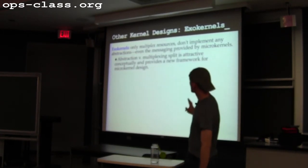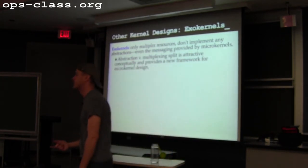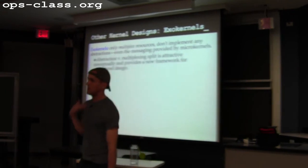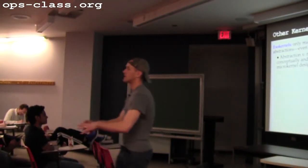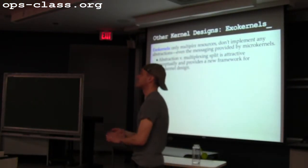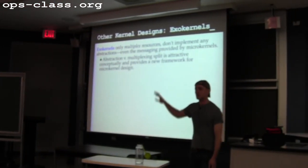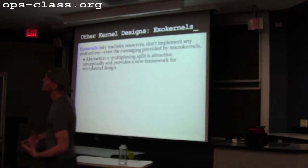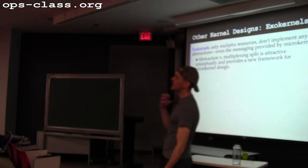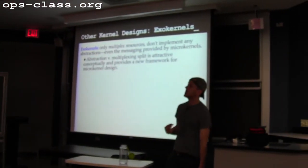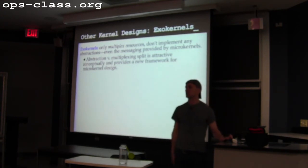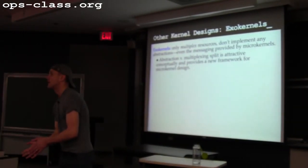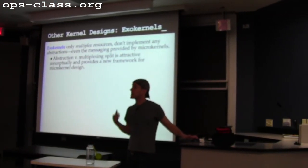Two other interesting kernel designs, both continuations of microkernels. The exokernel idea was born at MIT. The way they split the kernel between things that provide abstractions and things that multiplex resources is really useful — that was their key conceptual contribution. What should be in the microkernel? The stuff that multiplexes resources. Abstractions don't need privilege — only multiplexing resources needs privilege.